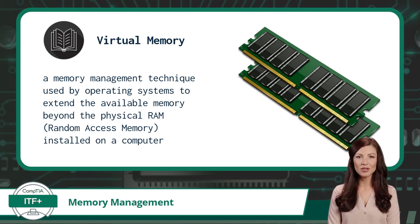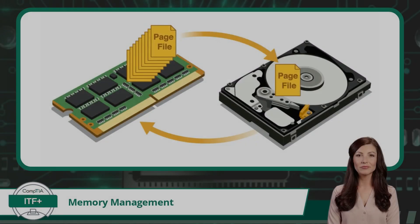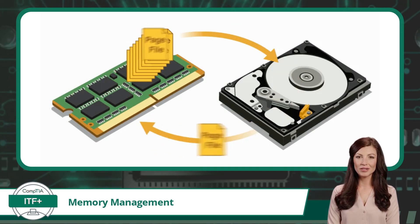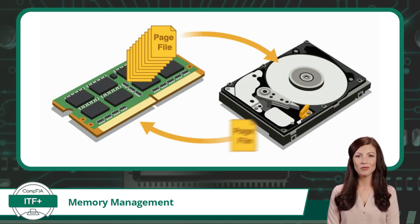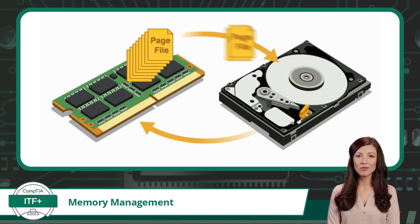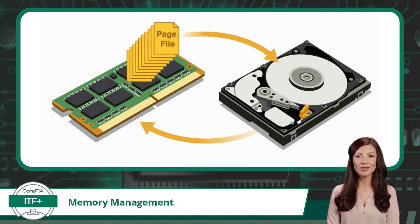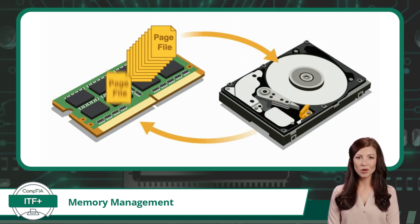Without virtual memory, the system may become limited in its ability to run multiple programs simultaneously or handle large processes. Now let's take a look at virtual memory in action and discuss each of its parts. The page file is a designated area on the hard disk that acts as a repository when the physical RAM becomes fully occupied.